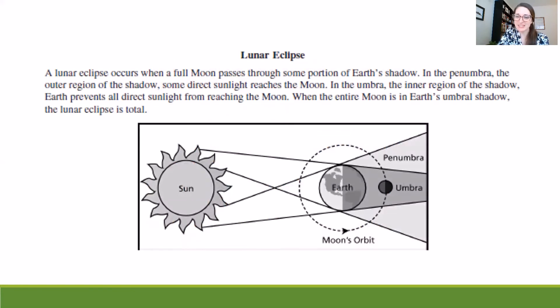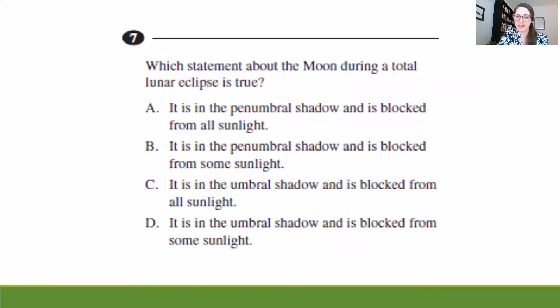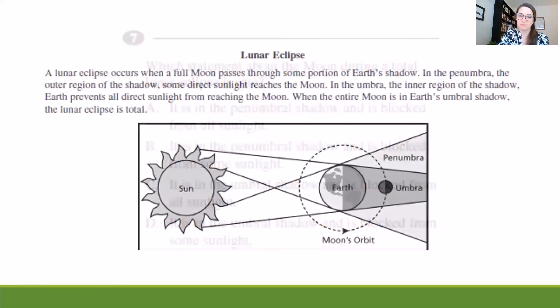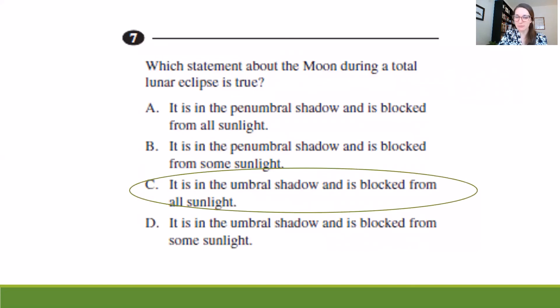So let's take a look. Well, if I take a look at where the moon is, I see that it's in the umbral shadow. So that allows me to go back and say, okay, it either has to be C or D. Now, is the moon blocked from all sunlight or is it blocked from some sunlight? Again, if we go back, it says at the top there, when the entire moon is in the earth's umbral shadow, the lunar eclipse is total. And we know that a total eclipse means that there's no light reaching it. So if we look at all of our options, we see that it is in the umbral shadow and it is blocked from all sunlight. C will be our best option.